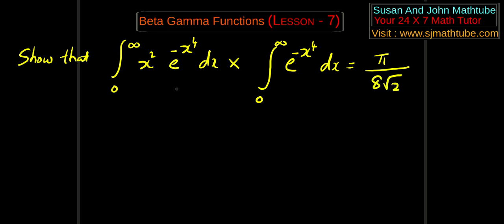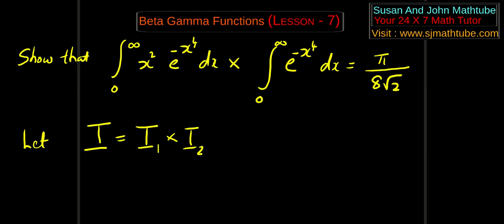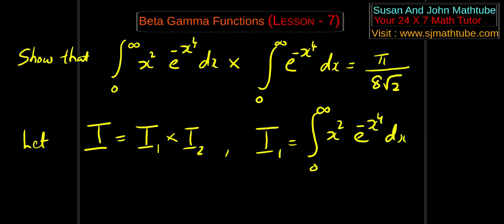It's a product of two integrals. I am going to call the given integral capital I. So let I equal i1 times i2, where i1 equals the integral from 0 to infinity of x² · e^(−x⁴) dx, and i2 equals the integral from 0 to infinity of e^(−x⁴) dx.